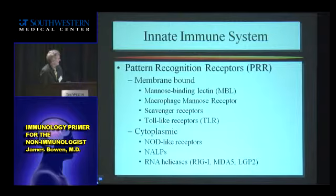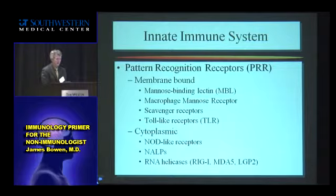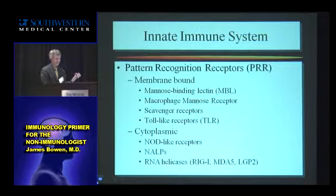This shows some of the receptors that the innate immune system uses — there are many different ones. There are proteins and sugar chains unique to bacteria that these receptors can recognize, so as soon as they see one of these unusual structures, they will attack it.